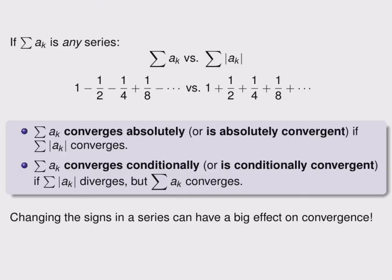On the other hand, the original series, a_k, converges conditionally, or is conditionally convergent, if the series of absolute values diverges, but the series without absolute values converges.